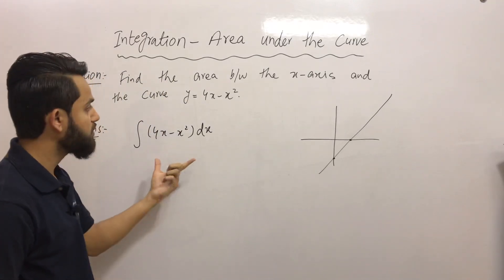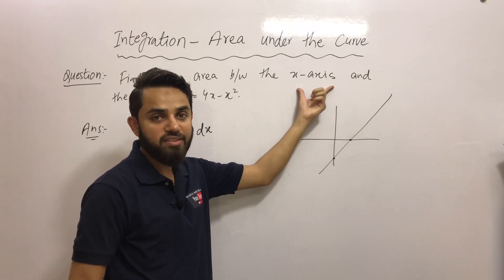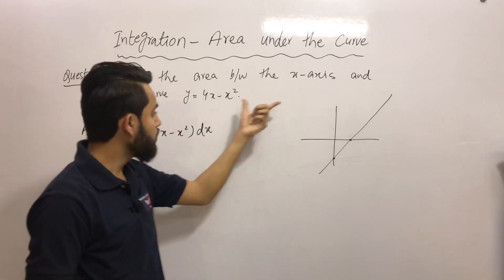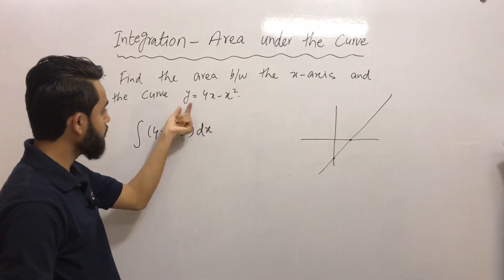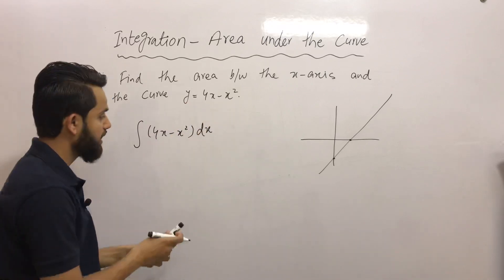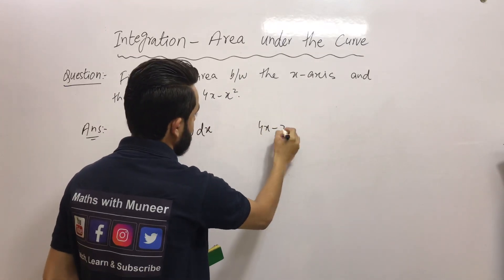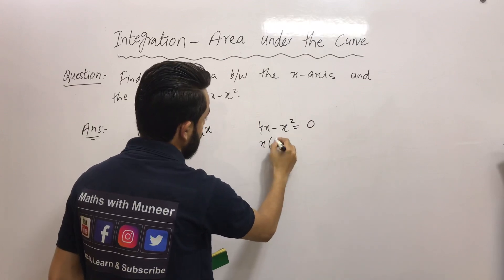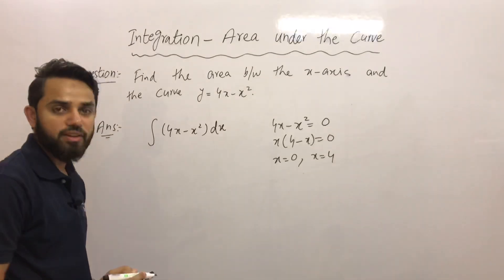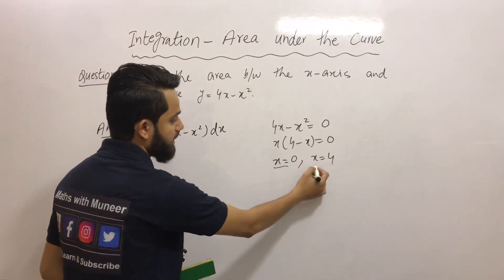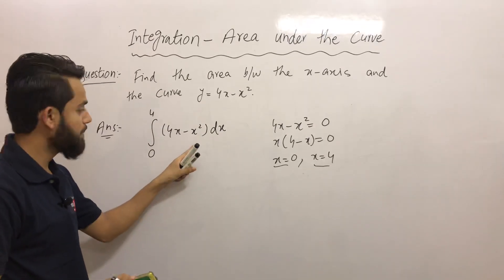When the question says find the area between the x-axis, we put y = 0. We know it is a quadratic equation because the power of x is two — a second-order polynomial. Putting y = 0 gives two values for x. So 4x minus x squared = 0; taking x common gives x(4 minus x) = 0, so x = 0 and x = 4. These are the lower and upper limits of integration respectively.